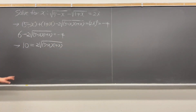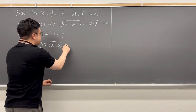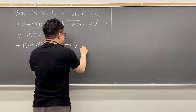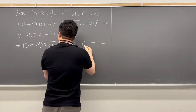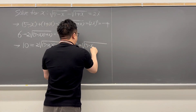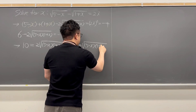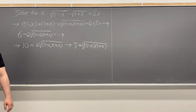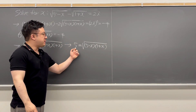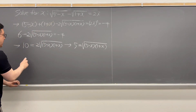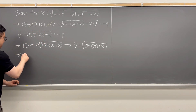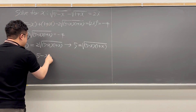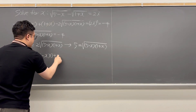If we divide the left and right-hand side by 2, this simplifies to 5 equals the square root of (5 minus x)(1 plus x). Now it's time to square both sides again, so 5 becomes 25, and 25 equals (5 minus x)(1 plus x).